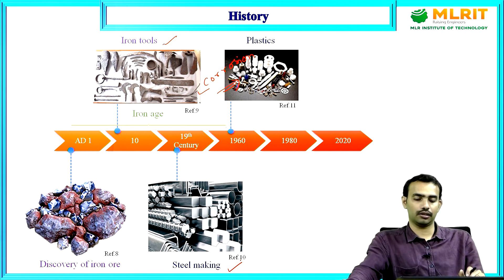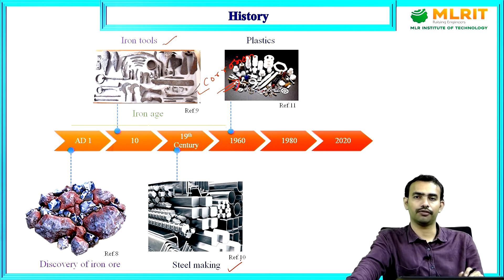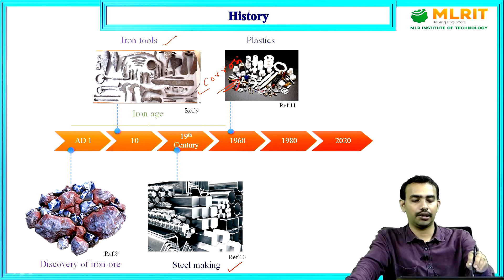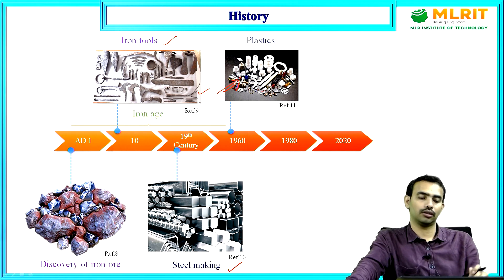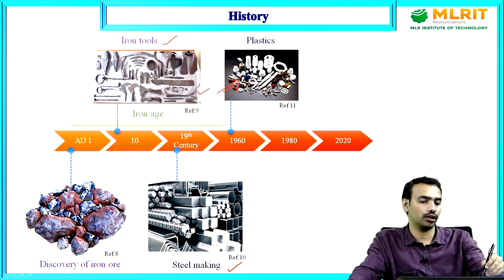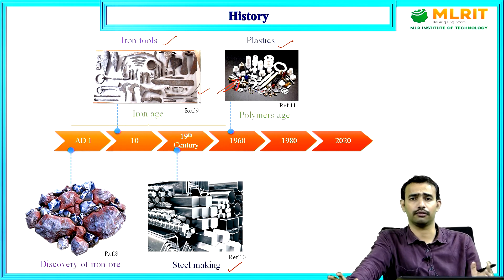In the 1930s, we came up with a new material — plastic. The raw material comes from natural plant extraction. Using plastic, we could produce components that are lighter in weight compared to iron-based tools. Whatever daily-used metal components existed were replaced with plastic material because of their lighter weight. We have almost replaced many materials in day-to-day life with plastic materials — we call it the Polymer Age. Even today we use huge amounts of plastic materials.